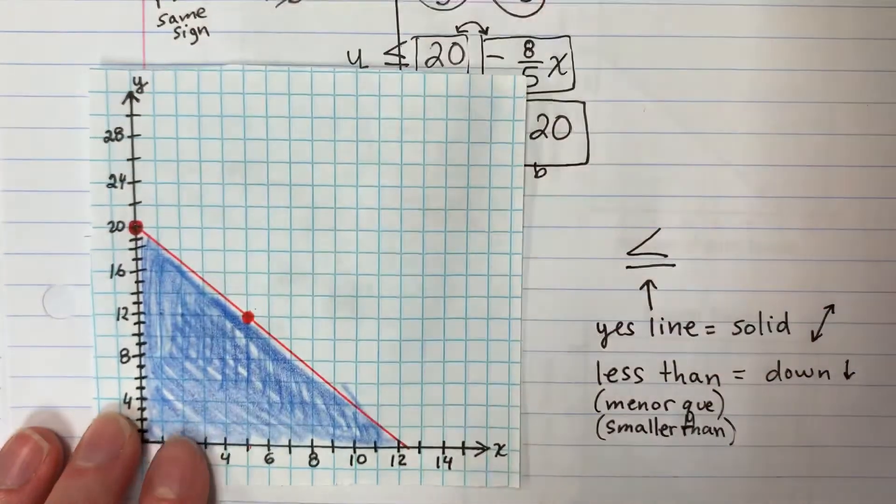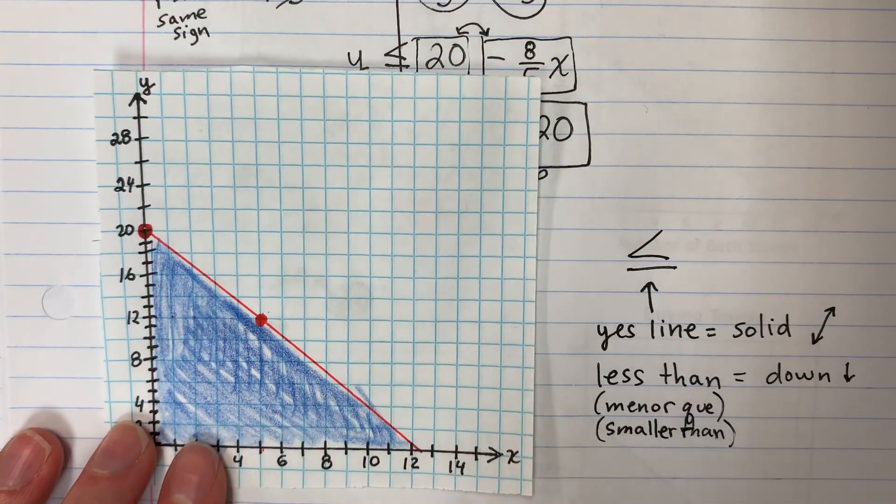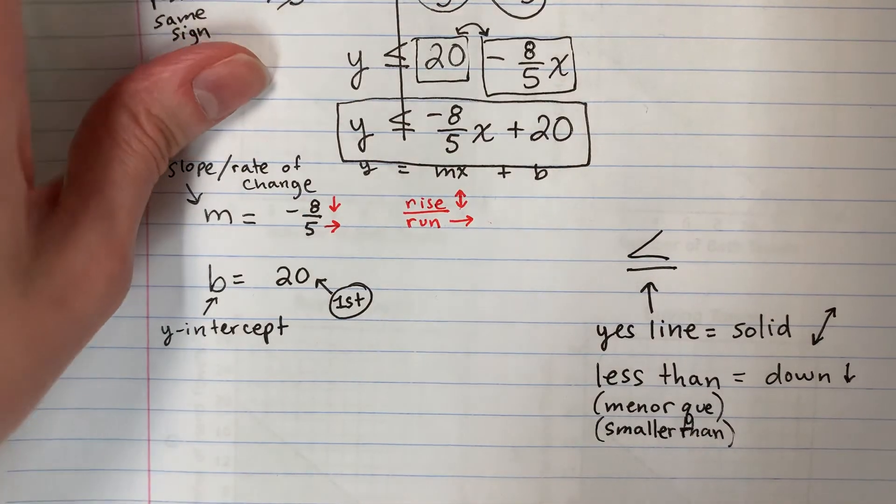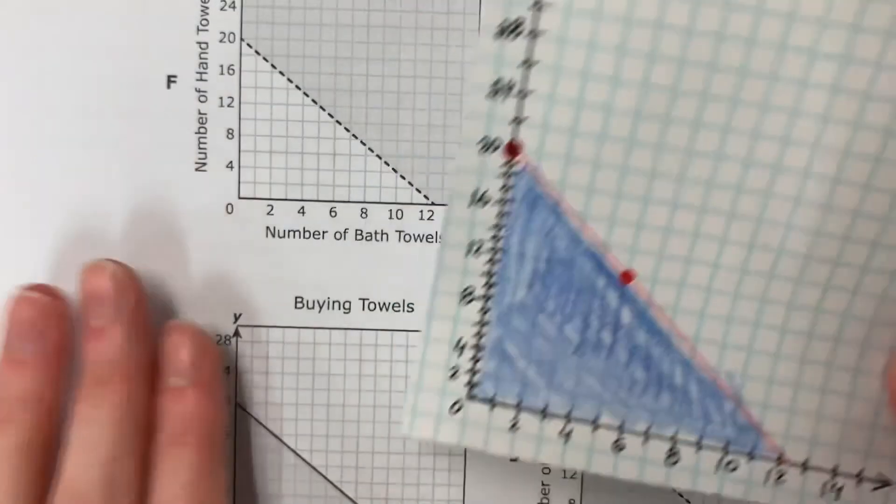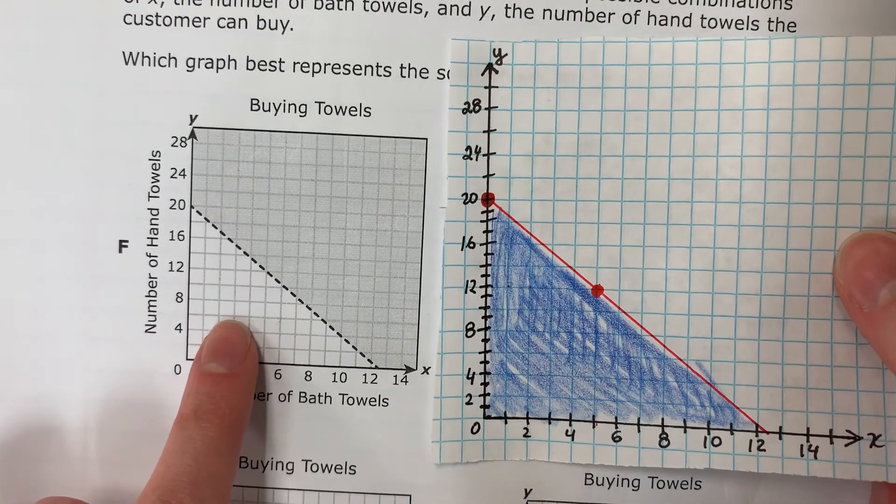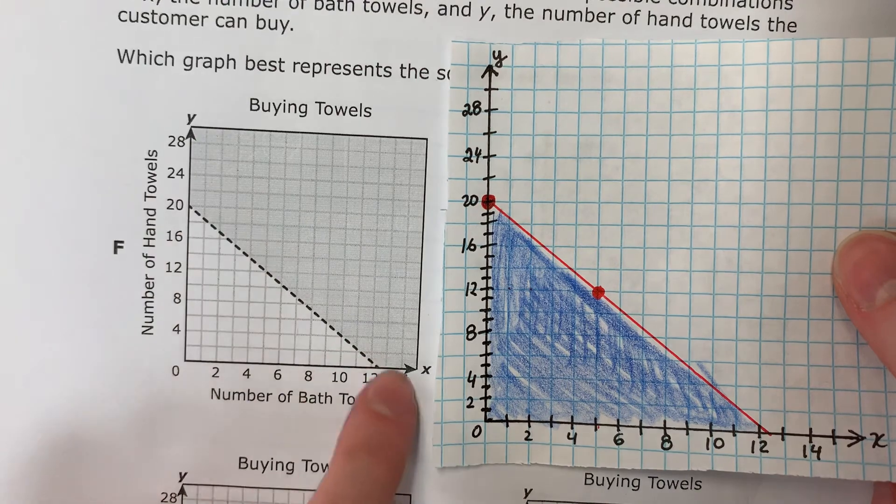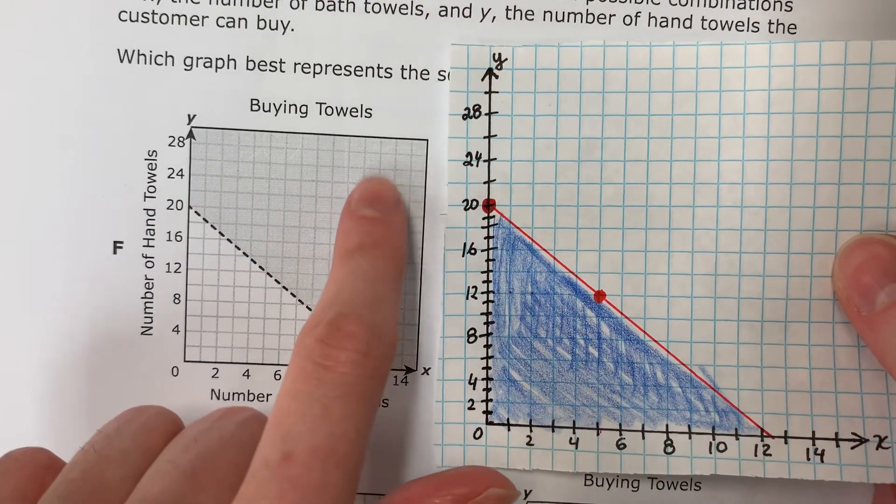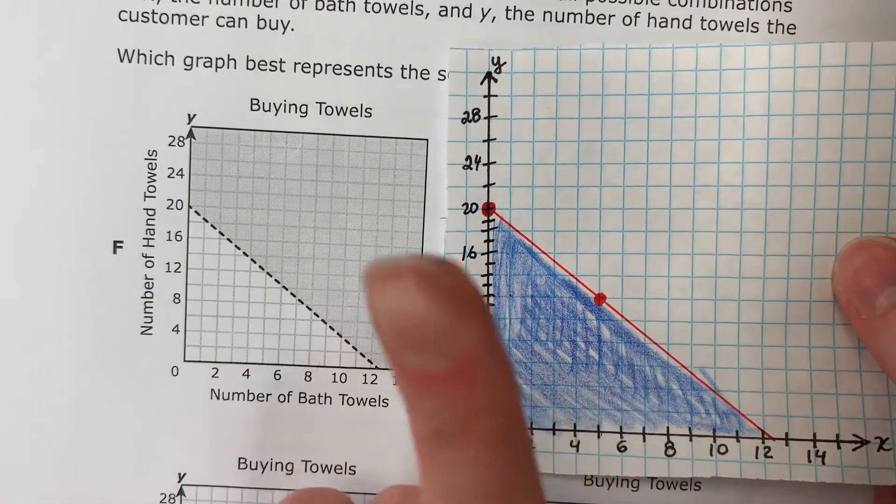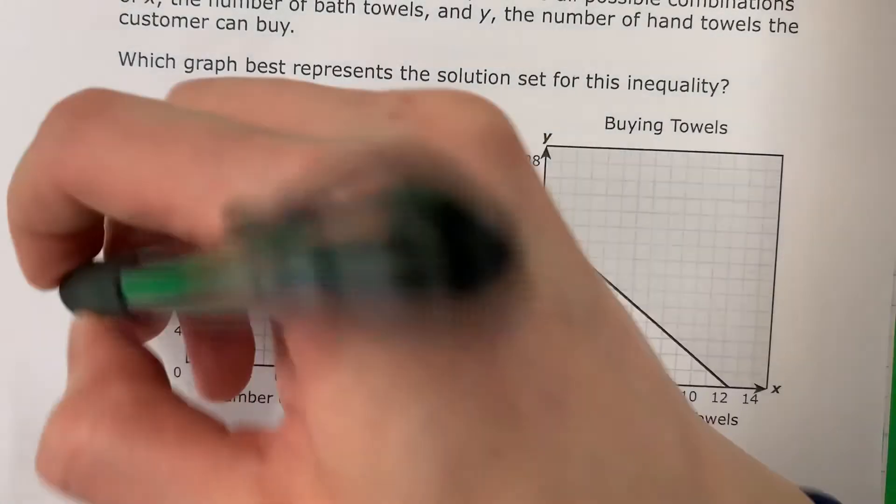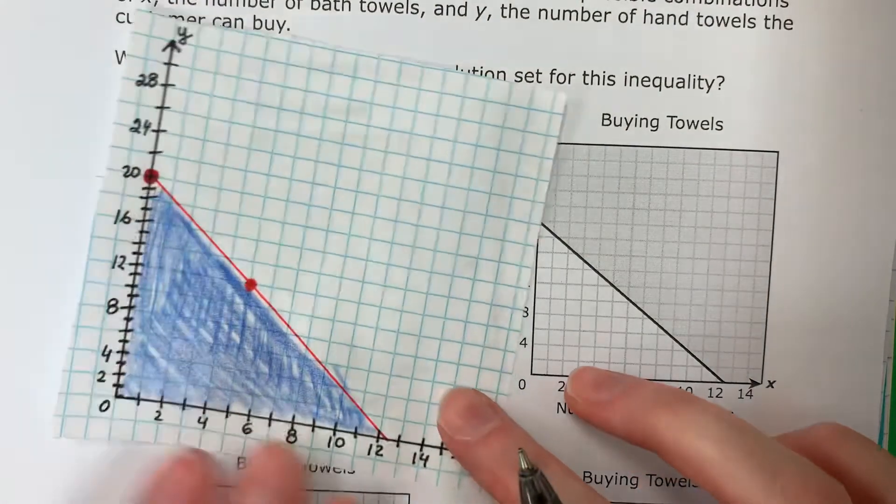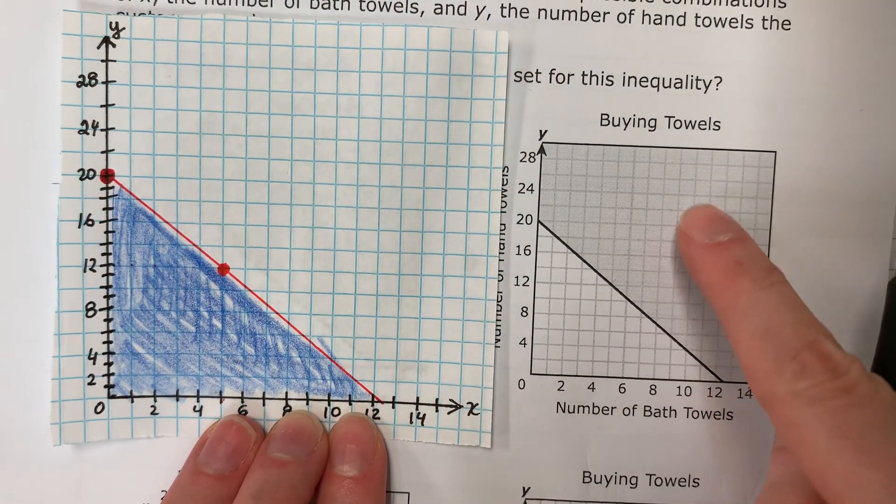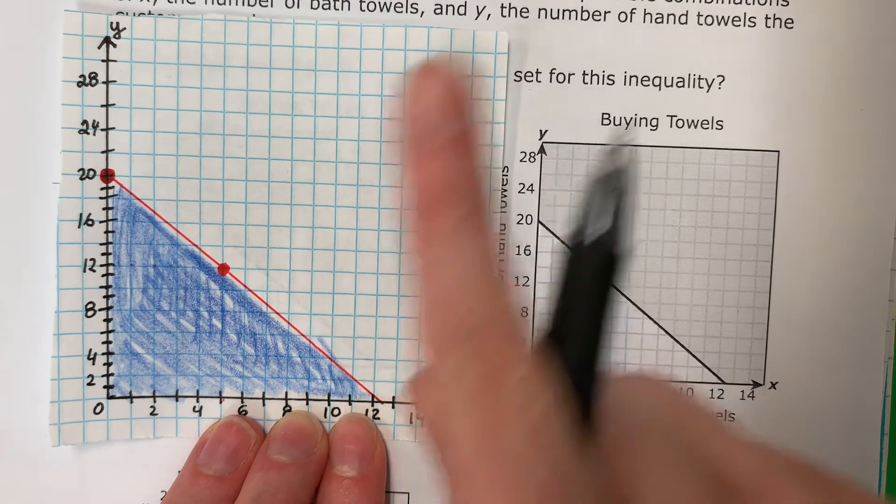So this is the kind of graph I want. Let's go ahead and take a look. Which graph looks like this? Is this the same? No. Look at the line. This is dashed. Not solid. Also look at the color. Here they have color up. No good. Let's take a look at this one. Here the color is up. So this is no good.